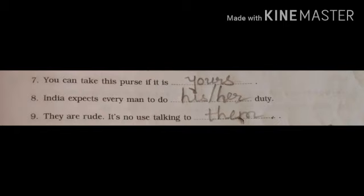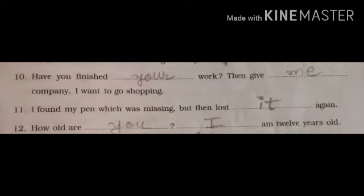Number nine: they are rude. It's no use talking to dash. This is not a person we are talking properly with. In this sentence, 'they' is given and 'they' is a personal pronoun. So with 'they', we are using the pronoun 'them', 'their', or 'theirs'. But here in the sentence, 'them' is coming. So the answer is: they are rude, it's no use talking to them. Number ten: have you finished dash? 'You' is given — you is a personal pronoun. With 'you', we are using 'your' and 'yours'. So the answer is: have you finished your work?